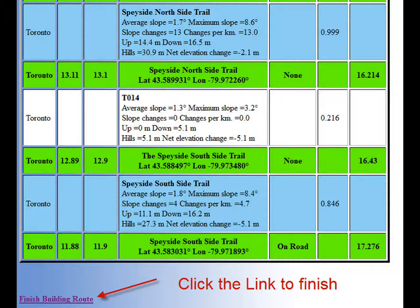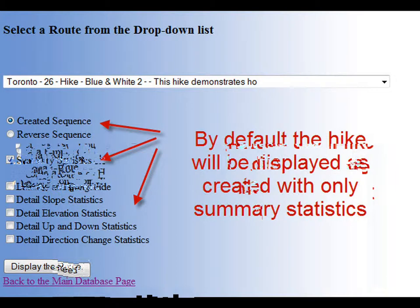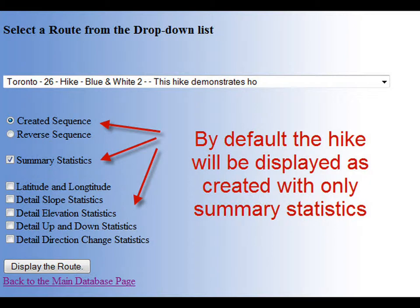To finish the hike, let's click the finish building route link at the bottom of the page. This will take us back to the main menu. Now it's time to display our route to be able to print a sheet that we can take on the trail. Click the view route or hike radio button, then click the click to proceed button. Here's the default menu. First click the drop-down list to select the hike that we want to display — in our case, it's the Toronto blue and white number two hike. Finding our hike is why we needed to name the hike in a meaningful way.